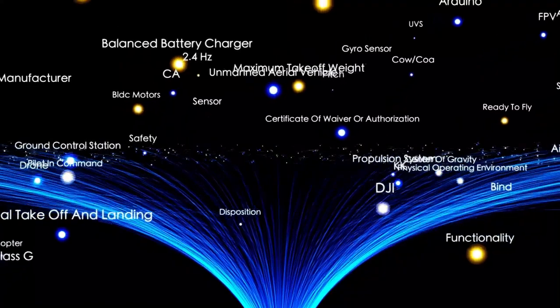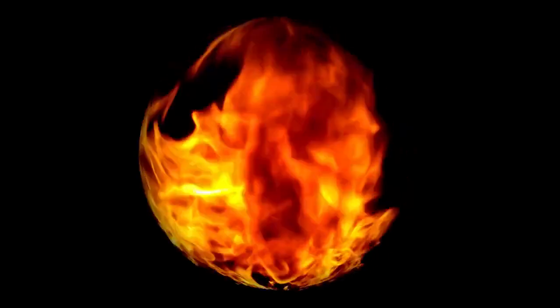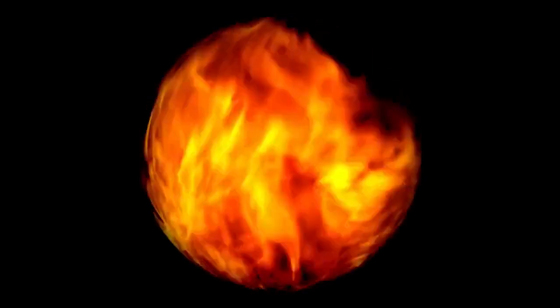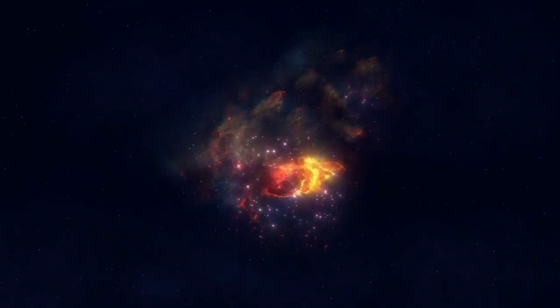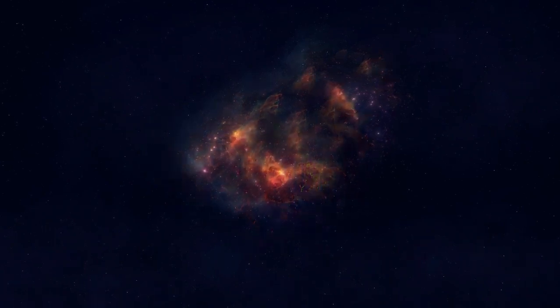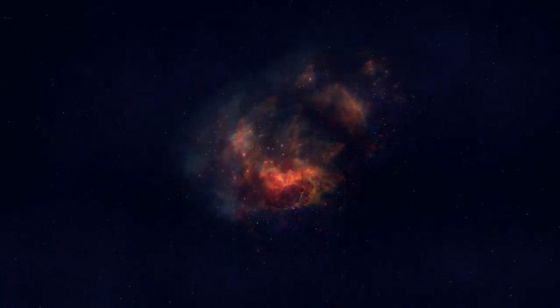As Betelgeuse approaches the final stages of its life, its pulsations and convective activity grow increasingly intense. The depletion of its nuclear fuel sets the stage for a dramatic supernova explosion, marking the end of its existence as a red supergiant.